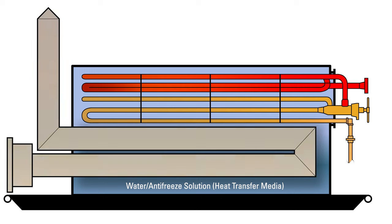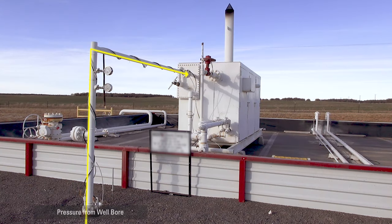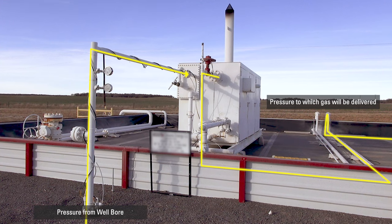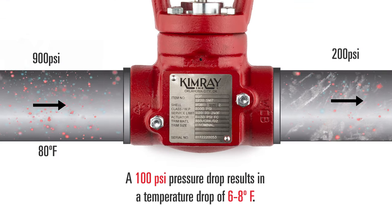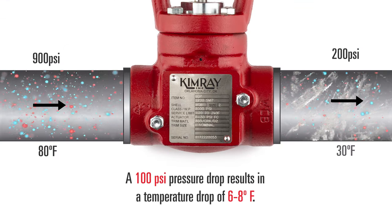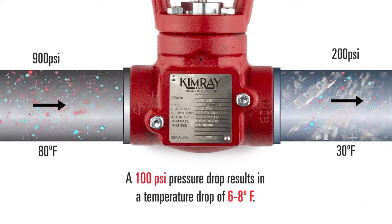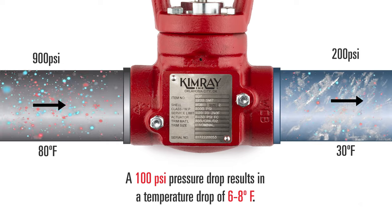All of these components are needed because the pressure of the well bore is higher than that of the pipeline to which the gas is being delivered. When you have a pressure drop, you have a temperature drop as well. With that temperature drop, freezing can occur or hydrates will form, and both of those issues can cause problems for the producer.